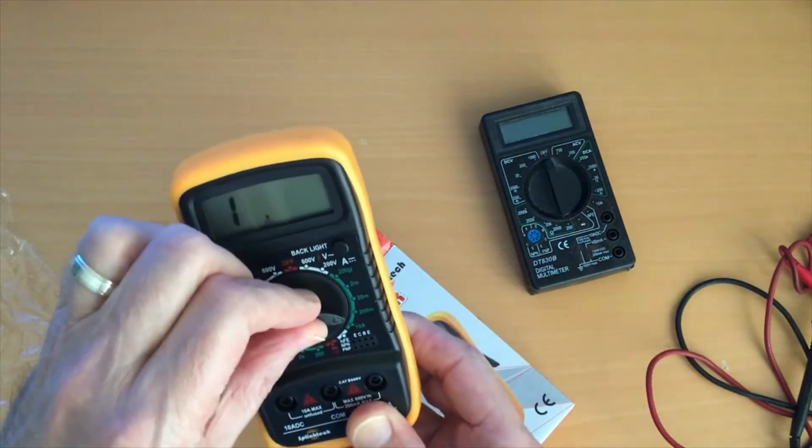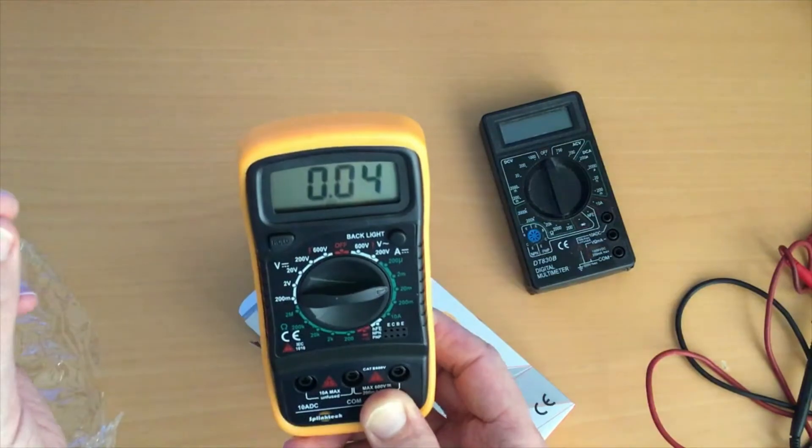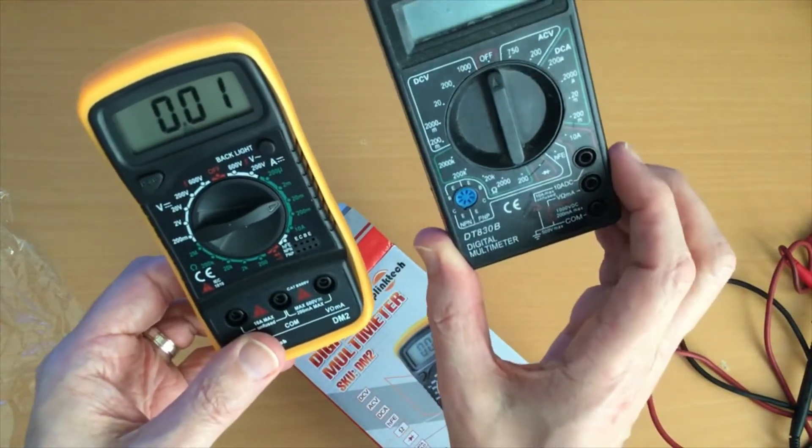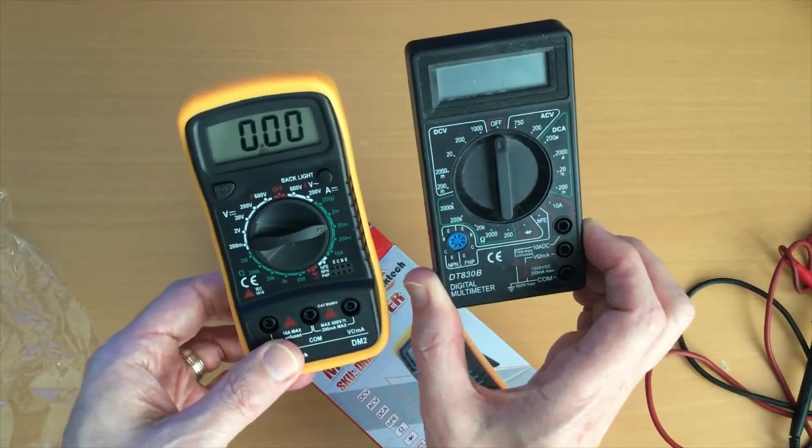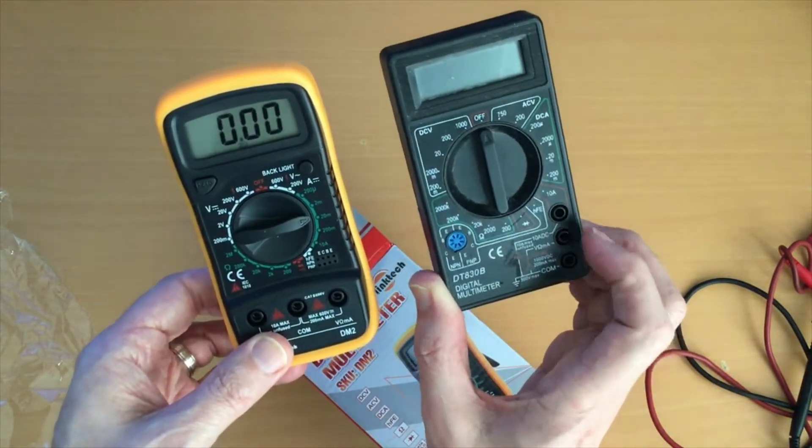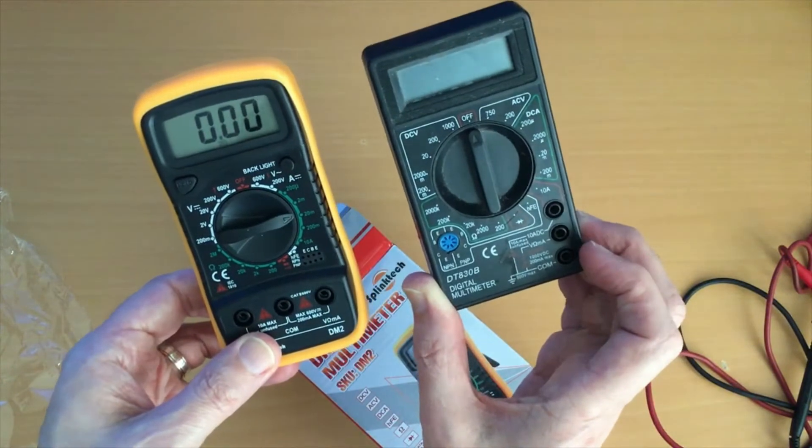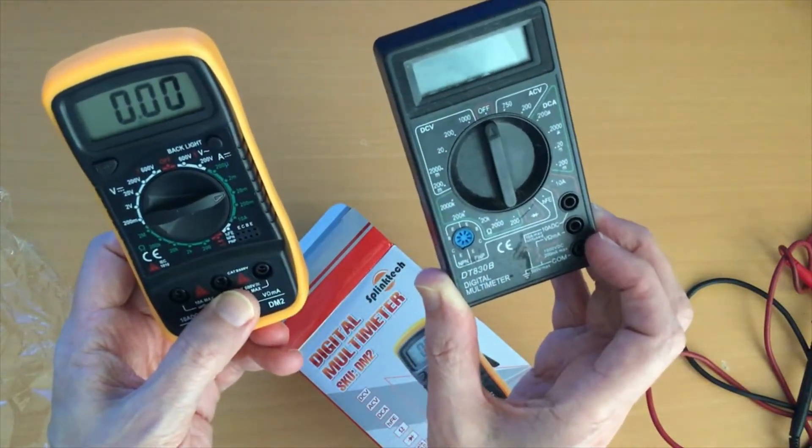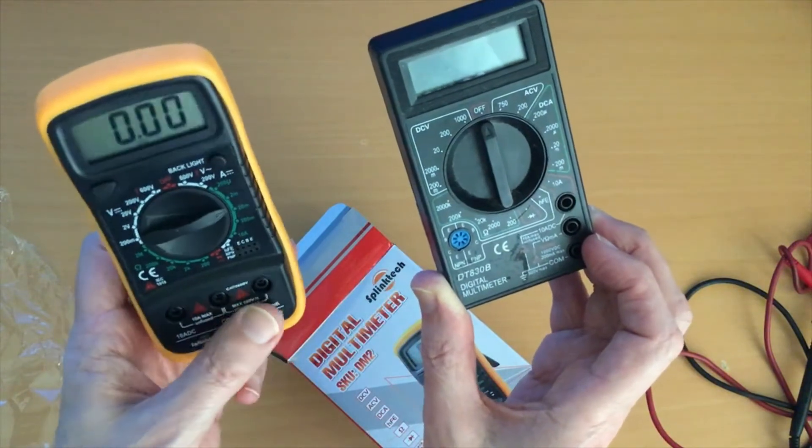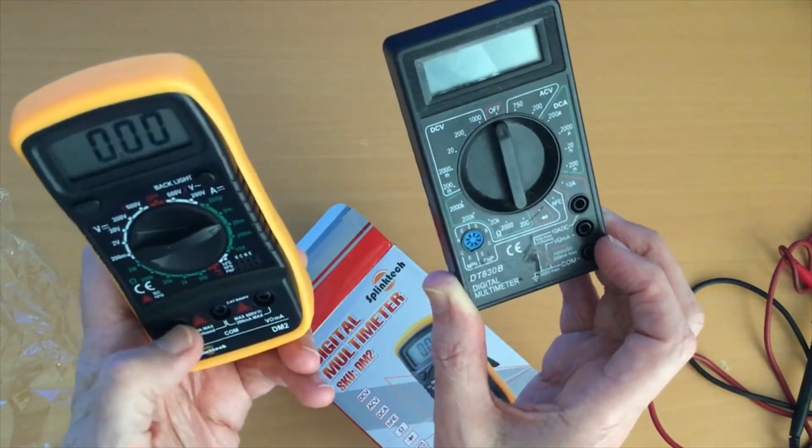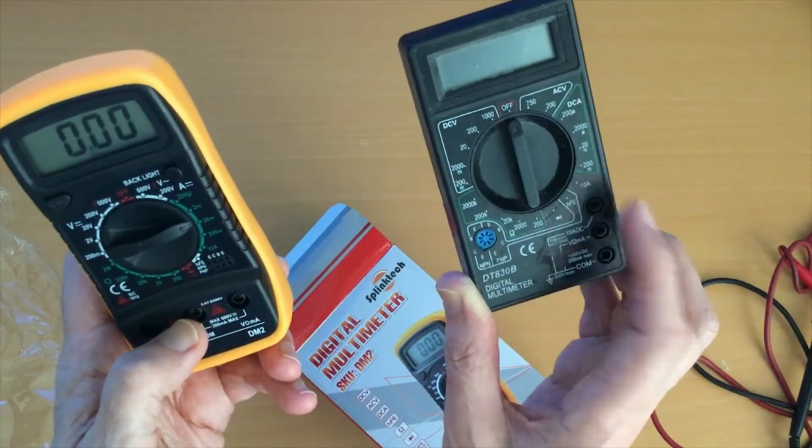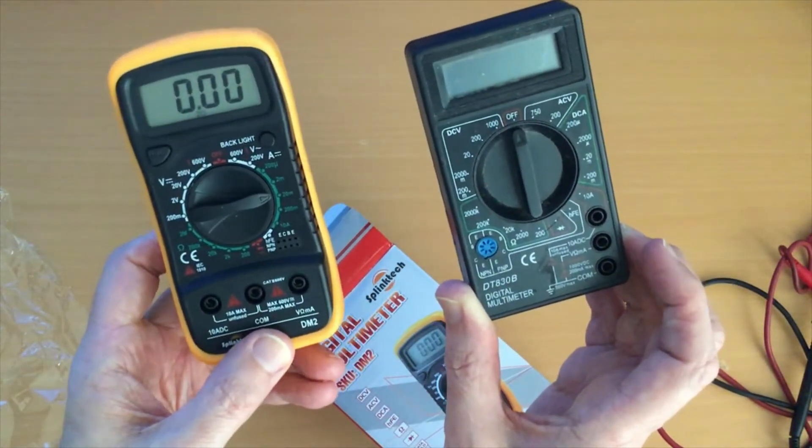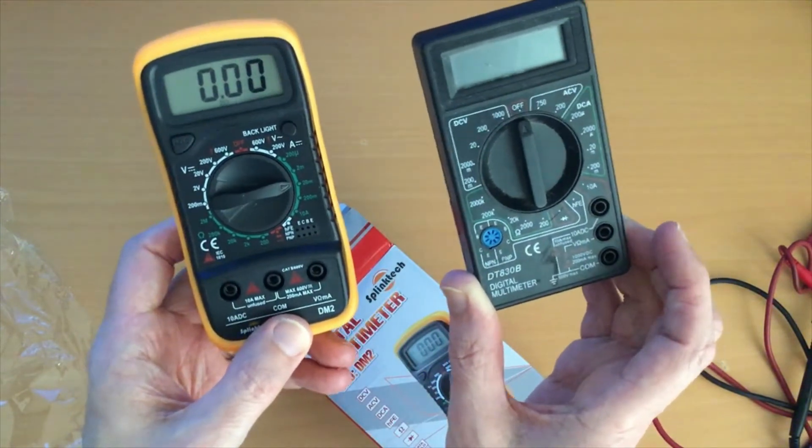Now like these type of multimeters, I think probably the guts are probably the same with both of these. You've got a common ground which is in the middle on this one and in the bottom on this one, and you've got a low and high amperage port for the probe to go in depending on whether you're measuring 10 amps current or a lot lower than that.